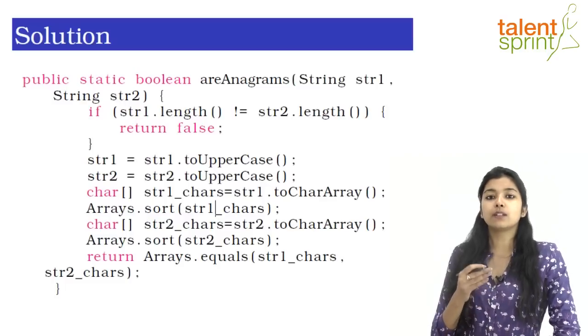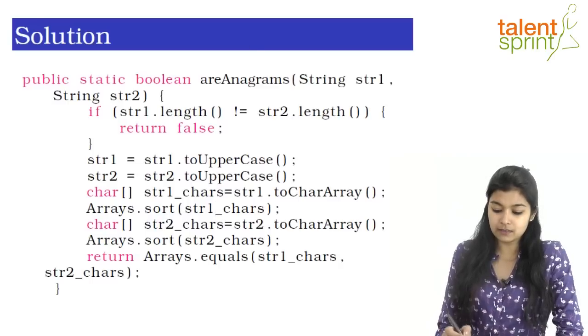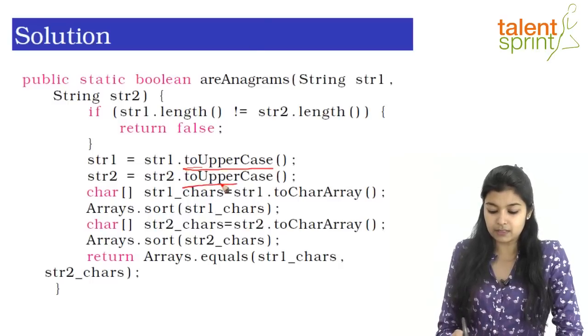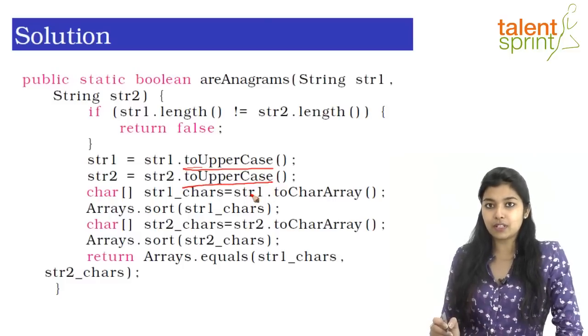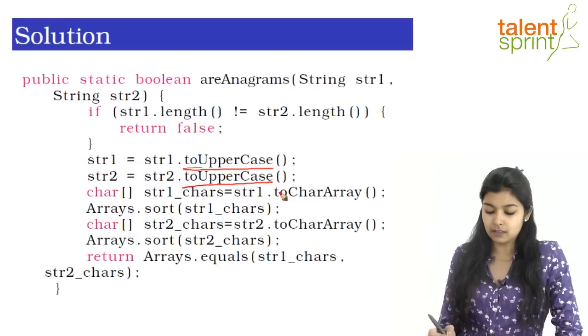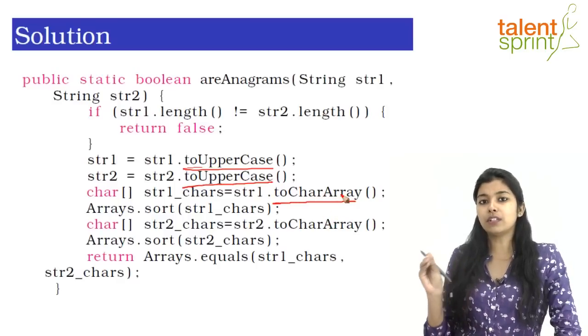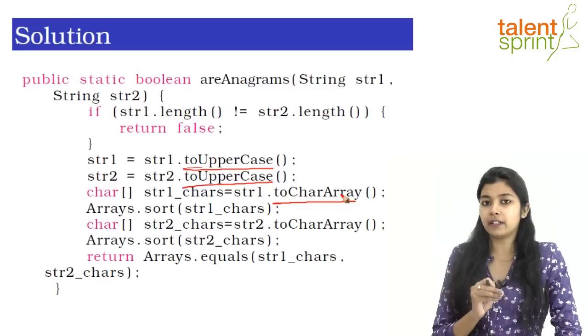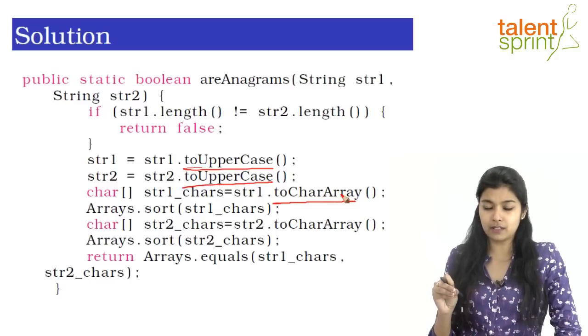First off, what we are doing is converting both the strings to uppercase using the pre-existing function toUpperCase. So this will convert both our strings to uppercase. Then we are converting both the strings to character arrays. So for that also, there is a pre-existing function we can use which is toCharArray. So string name dot toCharArray gives you a character array with all the characters of the string in there.